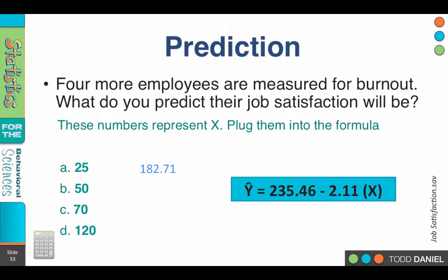Okay, welcome back. What value do you predict for Y for a person who scores 50 on burnout? 129.96. Notice that as burnout increases, the predicted Y values decrease. It's because burnout has a negative relationship with job satisfaction. What do you predict for a value, X value of 70, 87.76, and an X value of 120, negative 17.74.